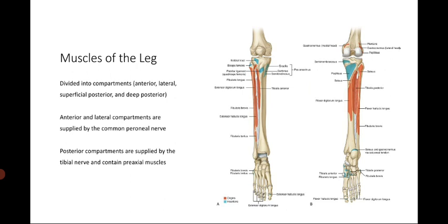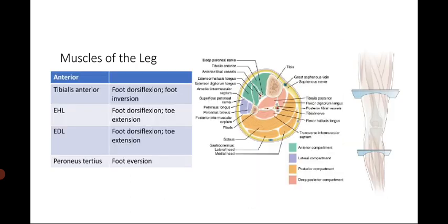Now we'll discuss the muscles of the leg, divided into compartments rather than by function. To generalize: anterior and lateral compartments are supplied by the common peroneal nerve, while the posterior compartments are supplied by the tibial nerve. We have two posterior compartments: the superficial posterior and the deep posterior.